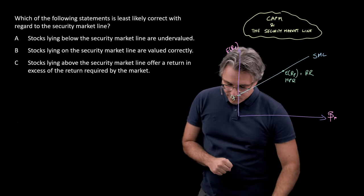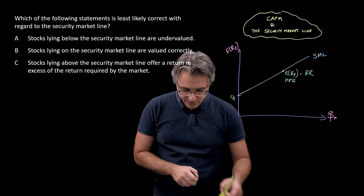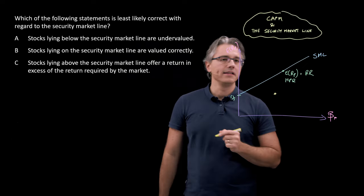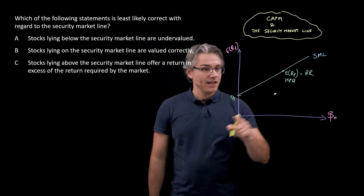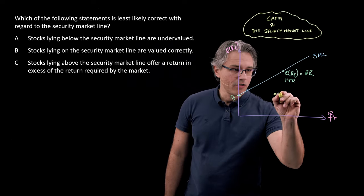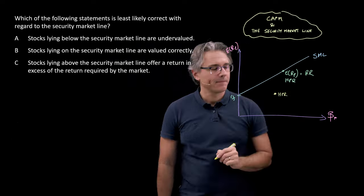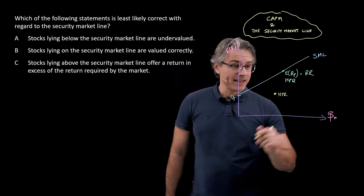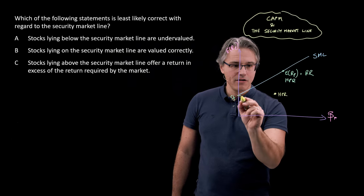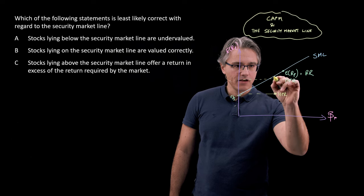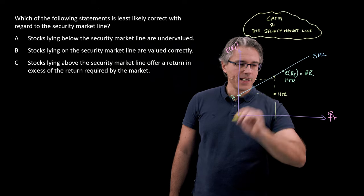However, what about those securities which lie above or below? Well, let's imagine one over here, one below the line. For this security, its expected return or its holding period return, the one that we predict for it, is actually lower than the one that would be predicted given its level of risk under the CAPM model.